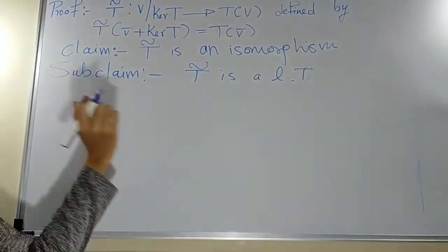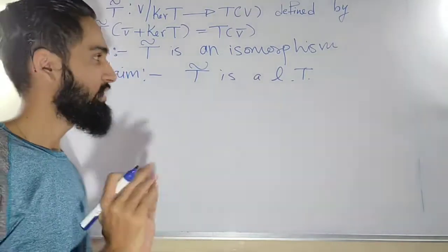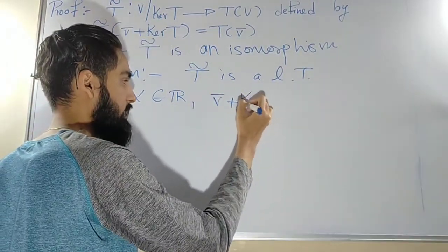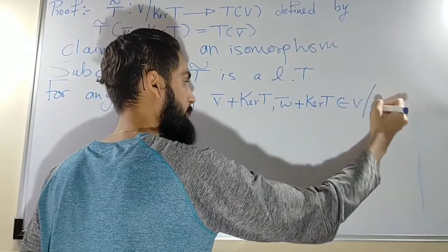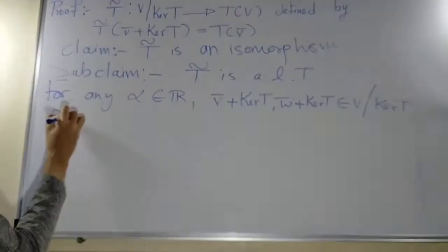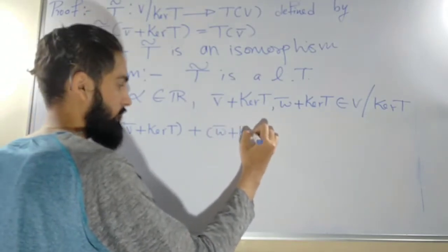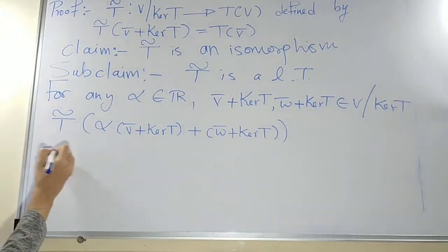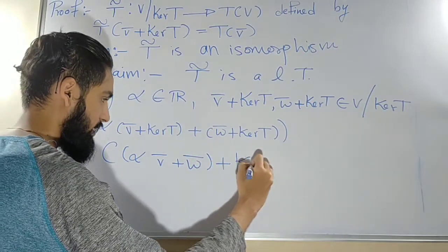Sub-claim one: T̃ is a linear transformation. To prove linearity we show T(αx + y) = αT(x) + T(y). I consider any scalar α in ℝ and any two elements v̄ + kernel(T) and w̄ + kernel(T) from the domain V/kernel(T). I consider T̃ of α(v̄ + kernel(T)) + (w̄ + kernel(T)). Using the operations on cosets, this equals T̃ of (αv̄ + w̄) + kernel(T).